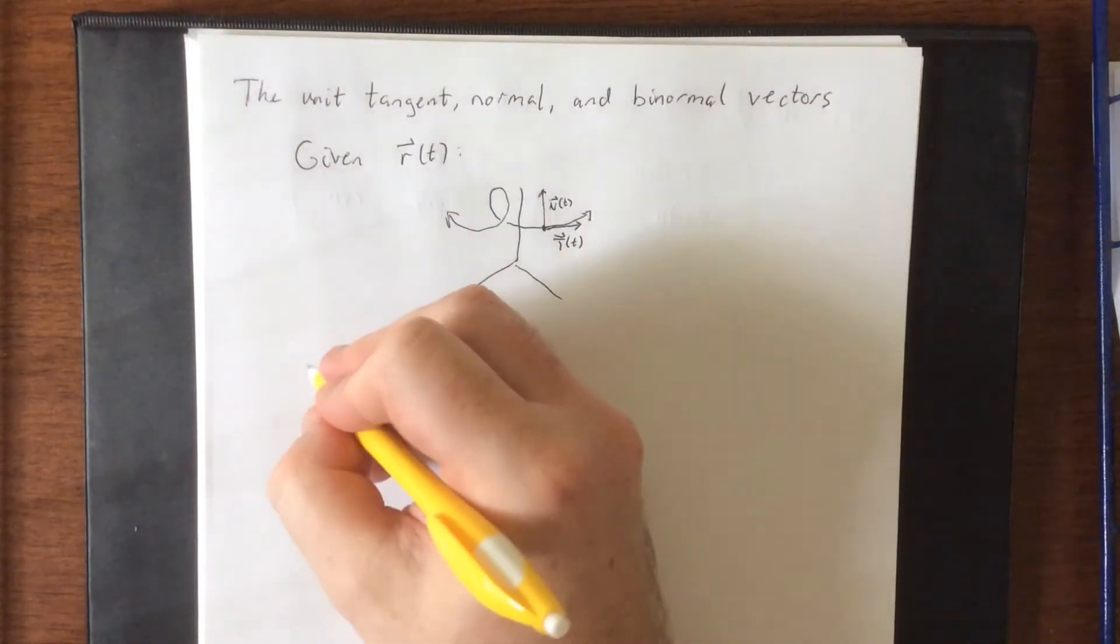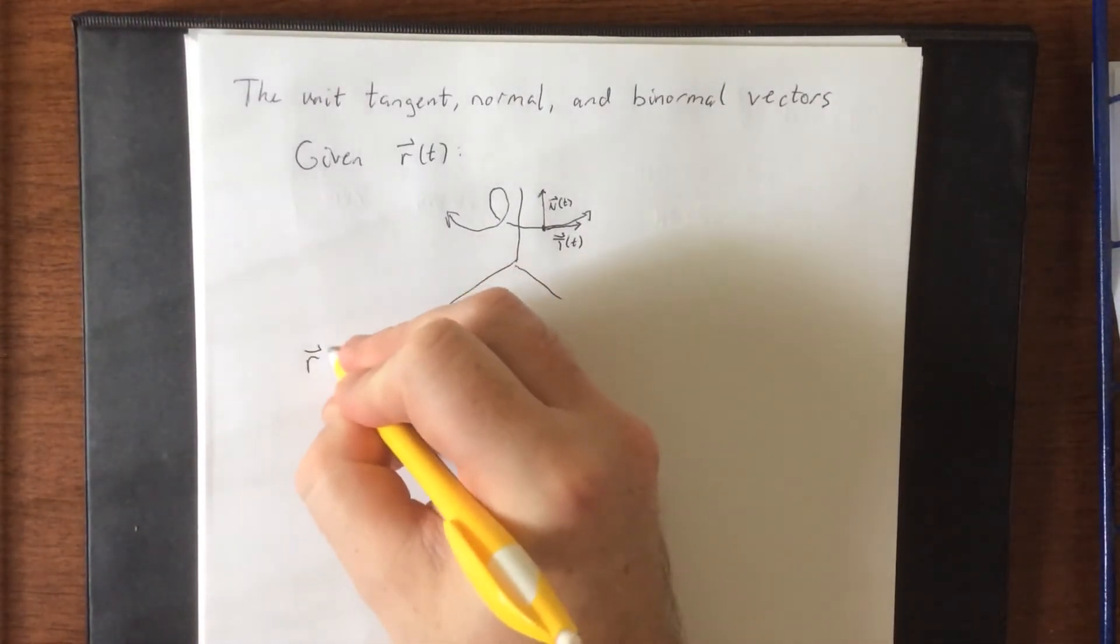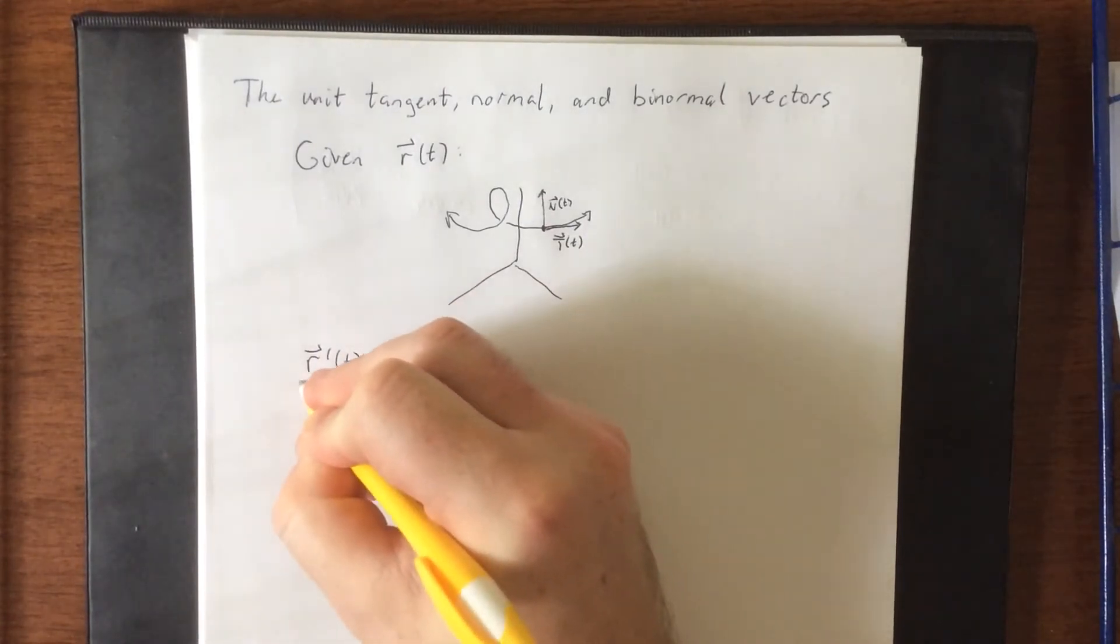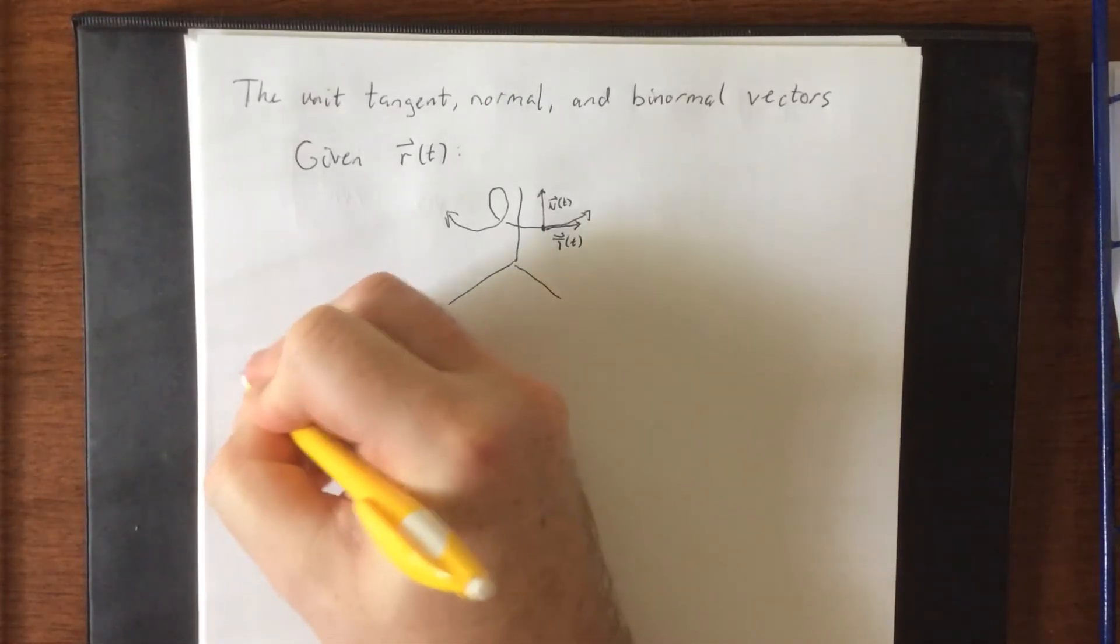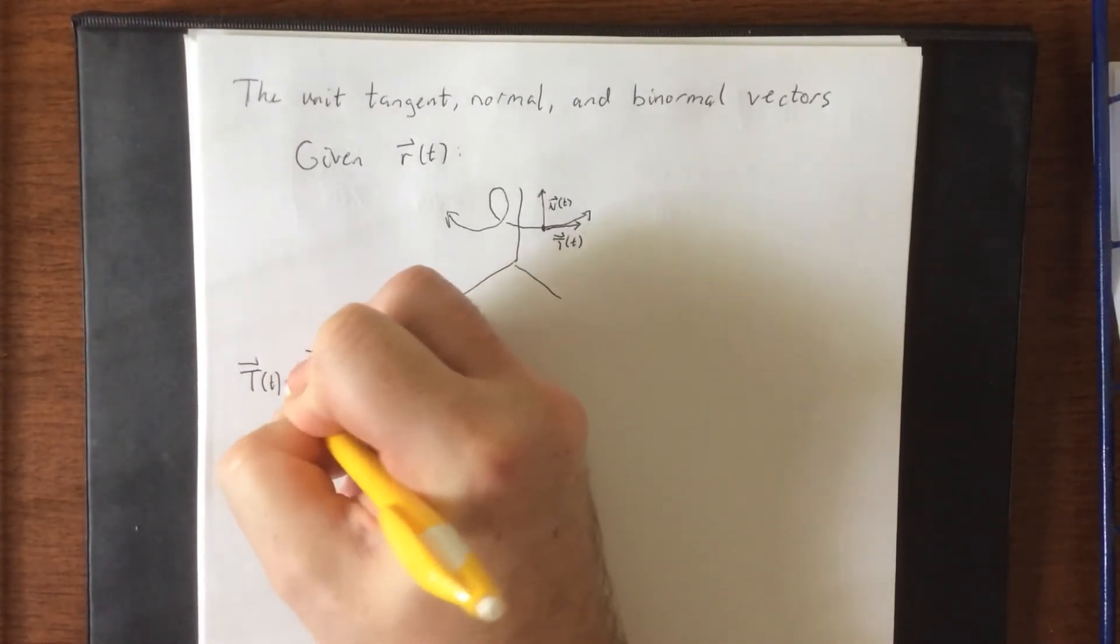The way that we got the unit tangent vector is starting with r, we take a derivative and then divide by the magnitude of that thing. So once you do that, you got yourself the unit tangent vector.